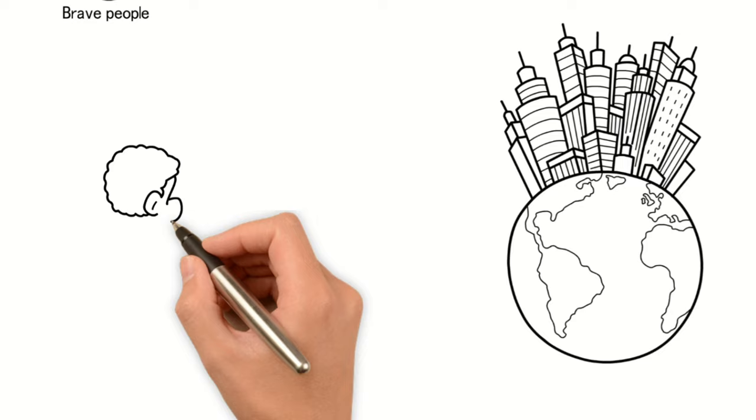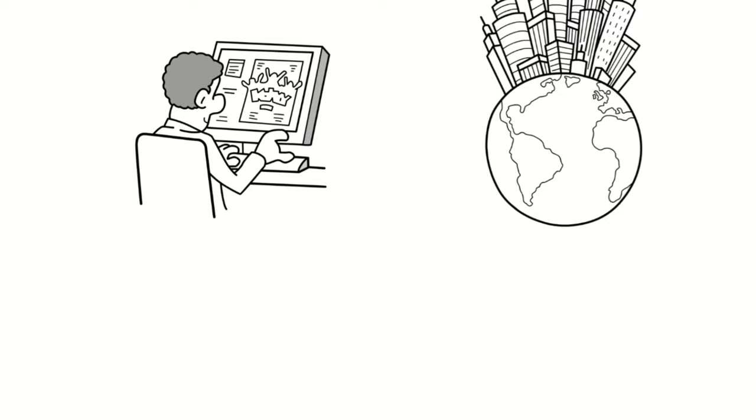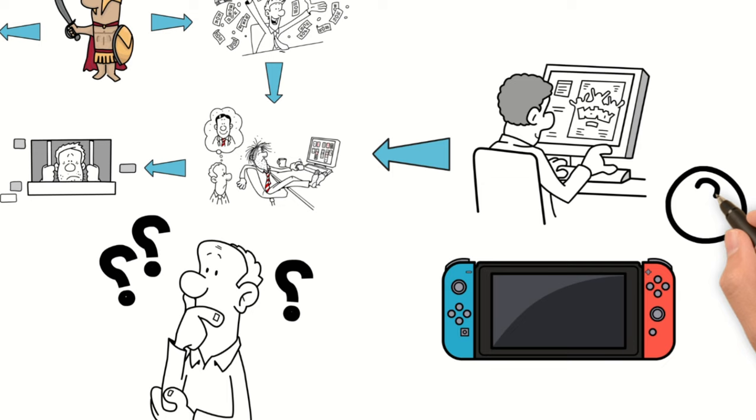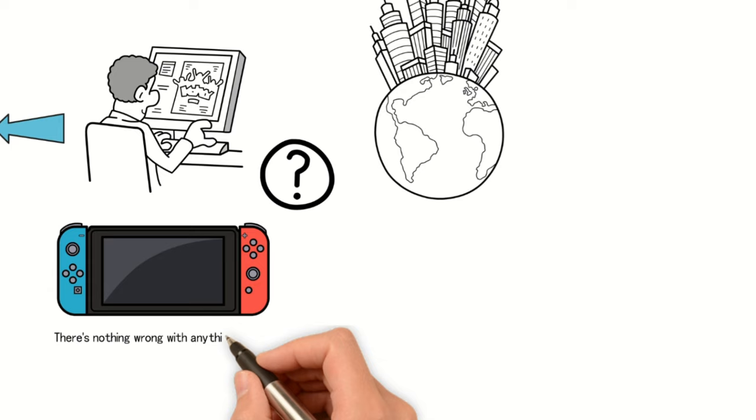Our lives are inseparable from the internet, but getting addicted to it is not the right path. For example, if you play video games every day and end up penniless, resorting to theft, it will lead to serious consequences. Can we blame the internet for that? No, the internet itself is not wrong; the problem lies in people becoming excessively obsessed and captivated by it, becoming prisoners of the internet.